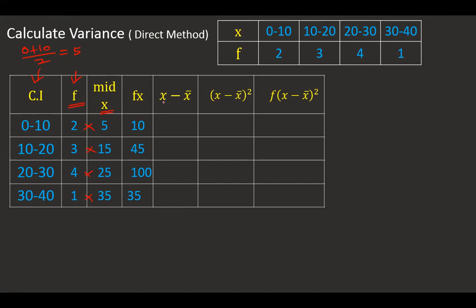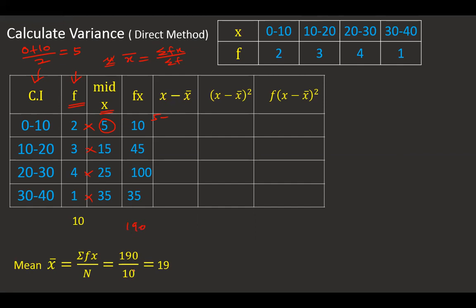Then I find x minus x bar. To find x bar, I calculate sigma fx divided by sigma f. I total the fx column and the f column. Adding fx: 10 plus 45 plus 100 plus 35 gives 190. Then 190 divided by 10 is 19. So x bar equals 19. Now I subtract 19 from each mid-x: 5 minus 19 gives minus 14; 15 minus 19 gives minus 4; 25 minus 19 gives 6; and 35 minus 19 gives 16.